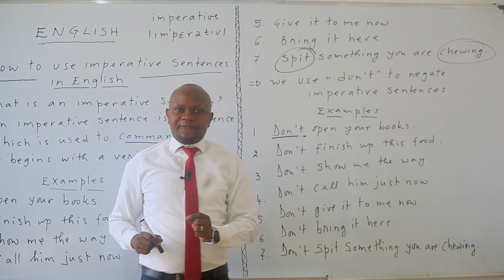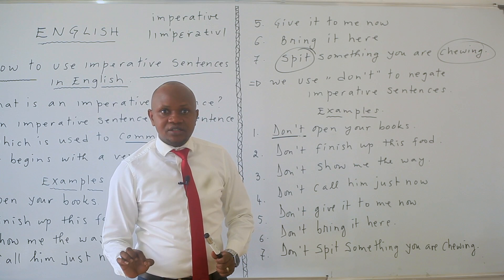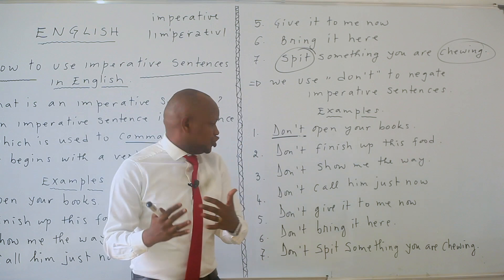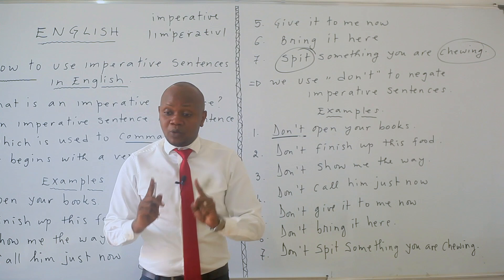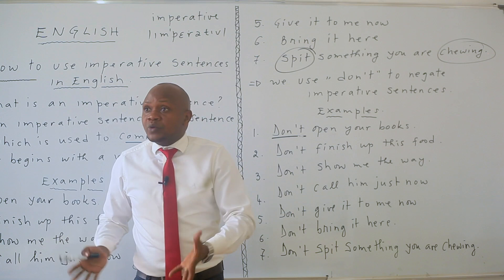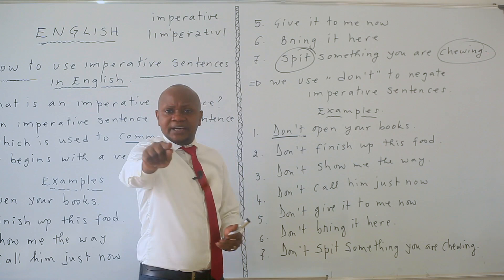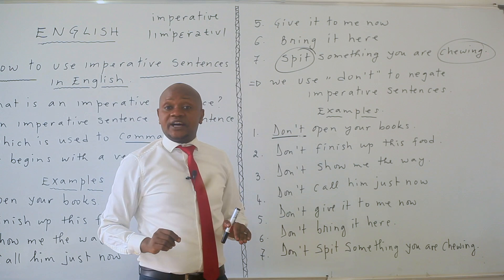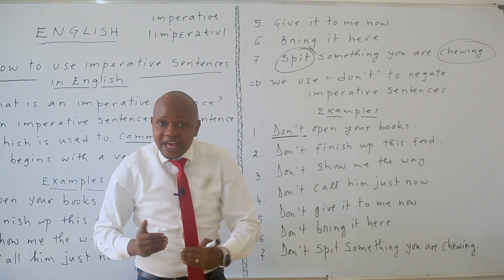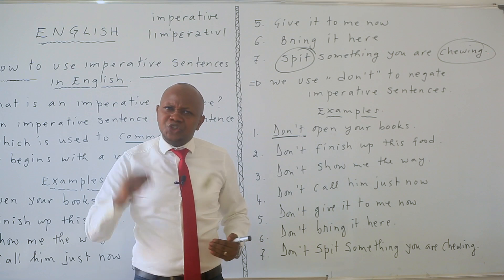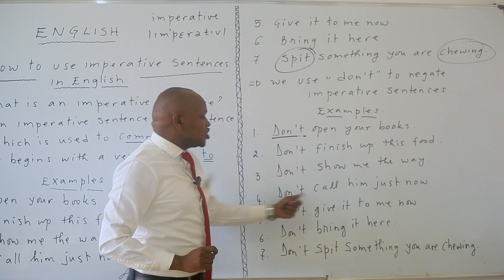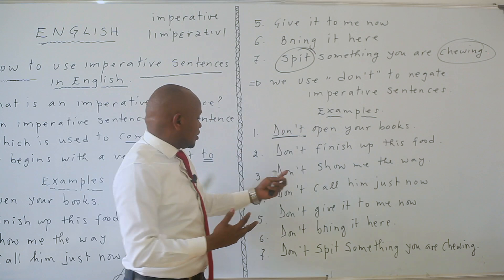Don't finish up this food — there is someone else who needs to eat. Don't show me the way — I am the one who is going to show the way myself. Don't call him just now — that is a commanding sentence, that is an imperative sentence.